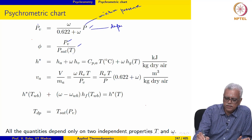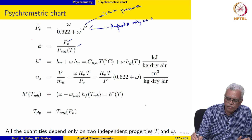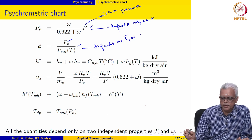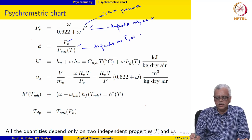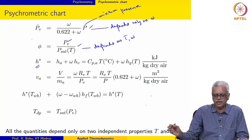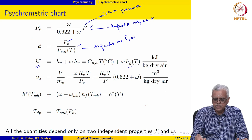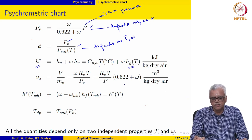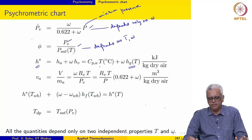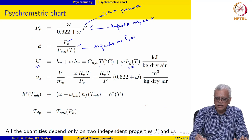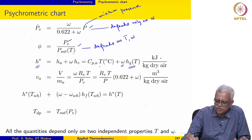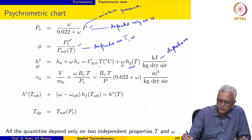Since mixture pressure is constant, PV depends only on omega. Relative humidity phi is nothing but PV over PSat of T. So PV depends on omega and PSat depends on T, meaning phi depends on both omega and T. H star may be written as HA plus omega HV, and HA itself as Cp times T, plus omega times Hg of T. Hg of T is dependent on T; the first term is linearly dependent on T; and H star depends linearly on omega. So in principle this expression depends on temperature T and omega.